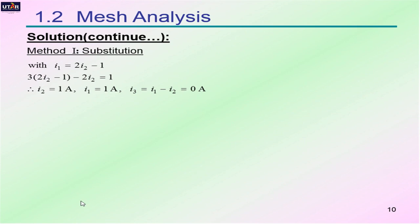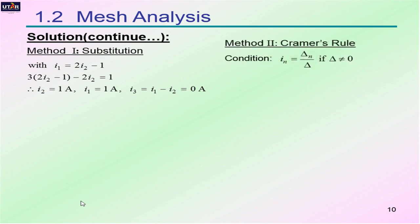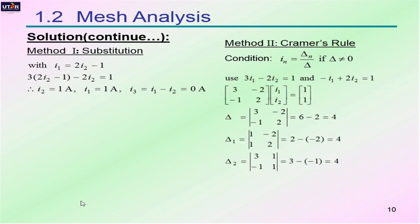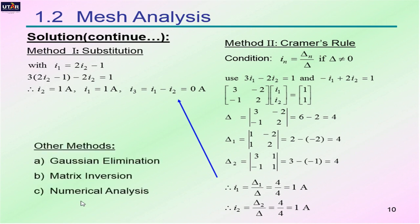The answer we obtain is I1 equals 1 ampere, I2 equals 1 ampere, and I3 — which is I1 minus I2 — equals 0 ampere. We can also use Cramer's rule to solve for the unknowns, which simplifies the process, and the answer is exactly the same as using the substitution method. Other methods you can explore include Gaussian elimination, matrix inversion, or numerical analysis.